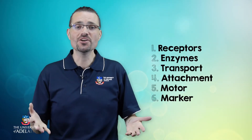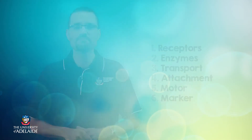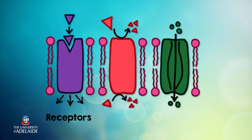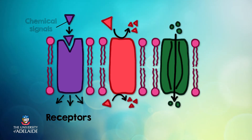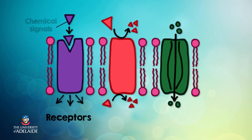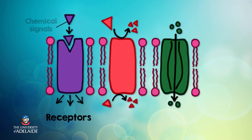In the next part of this video, I'll summarize each of these different proteins. Receptors are proteins that are exposed to the outer cell surface. Chemical signals like the hormone insulin bind to specific receptors on the cell surface, and this binding triggers a response inside the cell. Receptors are usually specific for just one particular chemical signal — for example, the hormone insulin only binds to the insulin receptor.